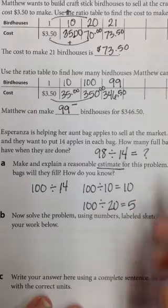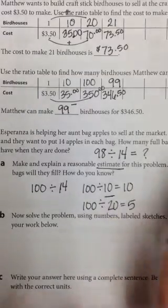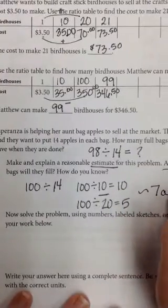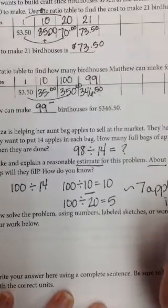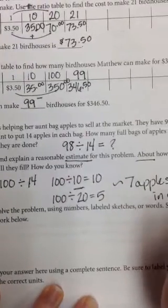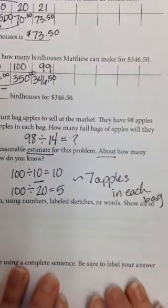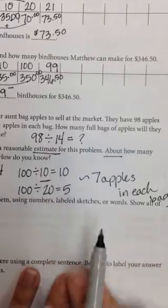And 100 divided by 20 equals 5. And if 14 is kind of in the middle of 10 and 20, then I'm going to say about 7 apples in each bag. About 7 apples in each bag. And that's just an estimate, right? It's not the actual answer.